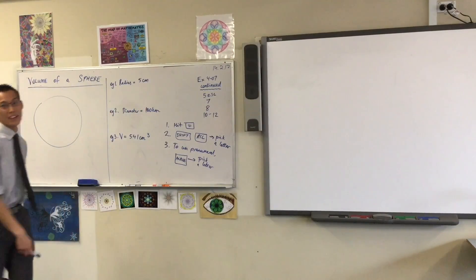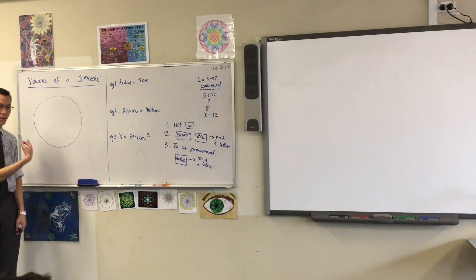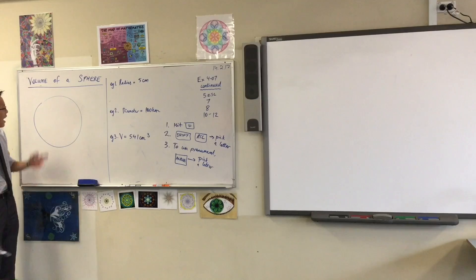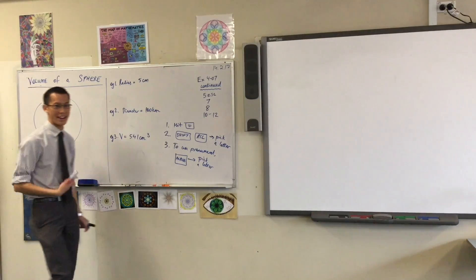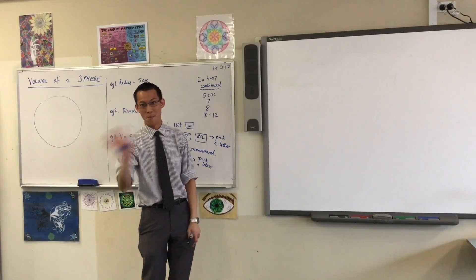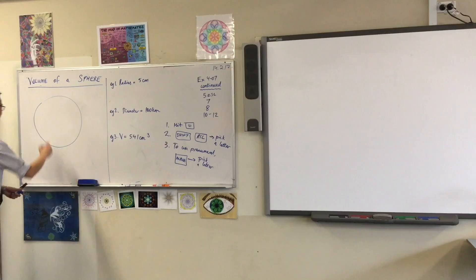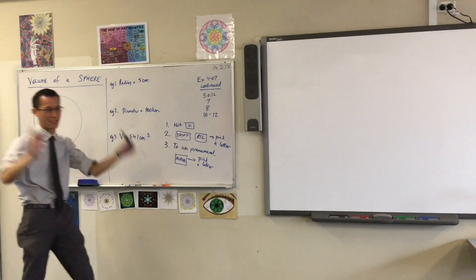So the heading is volume of a sphere, and on the board I'd love for you in your book, I've drawn a circle. This is a circle right now, but watch this. I'm about to make it a sphere. Oh, you did this last time. Yeah, BAM! It's a sphere. Okay, three dimensions.